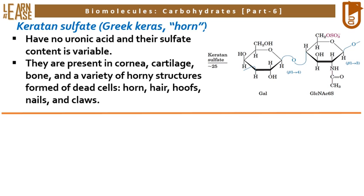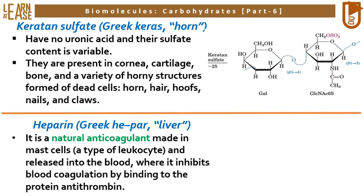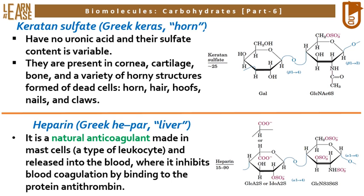The last type of glycosaminoglycan is heparin, which derives its name from the Greek word hepar, meaning liver. Heparin is a natural anticoagulant made in mast cells and released into the blood, where it inhibits blood coagulation by binding to the protein antithrombin. Its structure is composed of two monosaccharides: the first is either glucuronic acid or iduronic acid with sulfate at the second position; the second is glucosamine sulfate with two additional sulfates on its third and sixth positions.